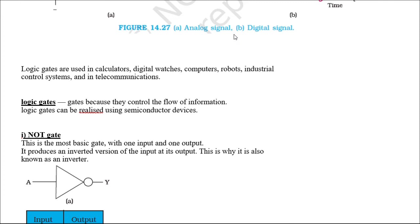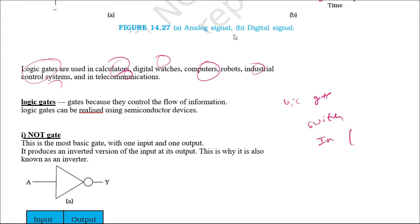Digital signals are generated using logic gates, and logic gates can be operated using these signals. Logic gates are used in calculators, computers, industrial control systems, and telecommunications. Basically, a logic gate is a switch — when you give an input, the output is determined based on the input condition and the type of gate, either on or off. These gates are basically of five types.